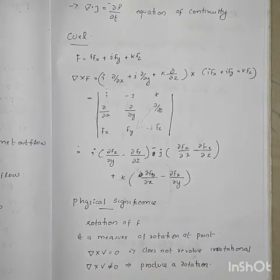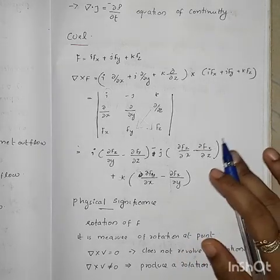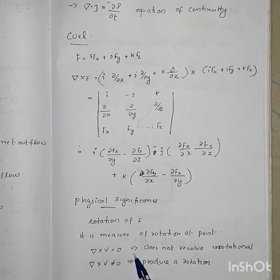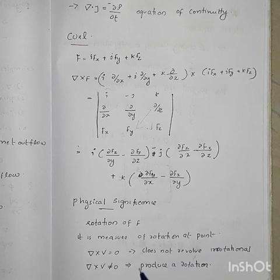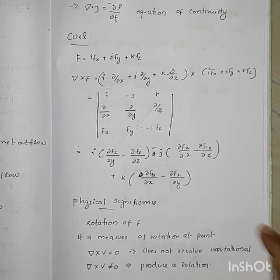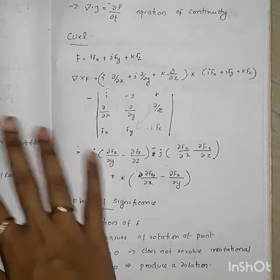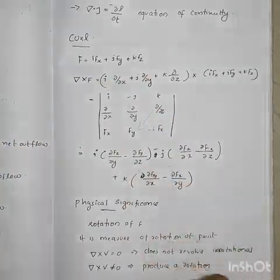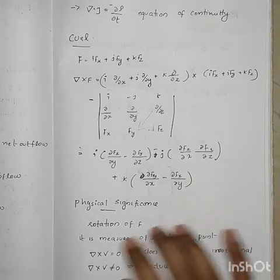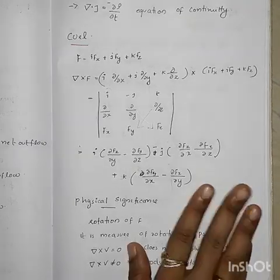Physical significance of curl: the curl is also known as rotation. It is the measure of rotation at a point. Del cross V equal to zero means irrotational. Del cross V not equal to zero means there is rotation. Gradient, divergence, and curl — curl is the cross product of the del operator.